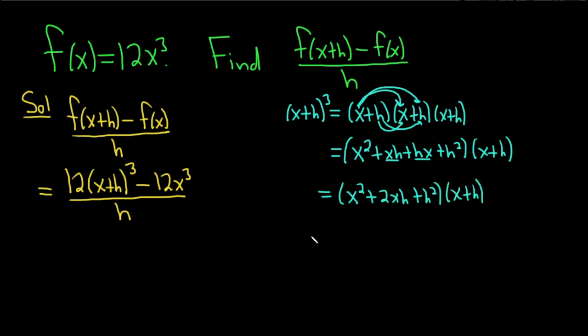Okay, so now we have to distribute again. So basically what we'll do is we'll take each of these terms and multiply it by both of these here. So we'll do x squared times x. That's going to give us x cubed. Then x squared times h. That's going to give us x squared h. Then we go to the next one, right? 2xh times x. Well, you multiply the x's, so that'll give you 2x squared h.